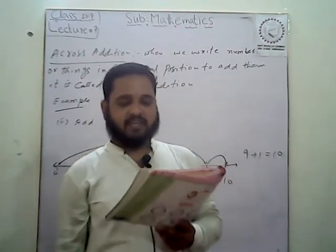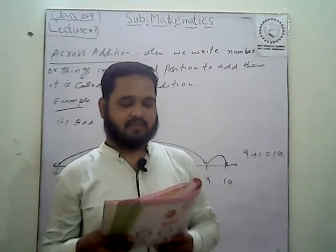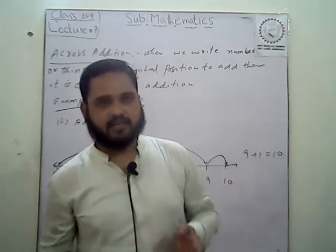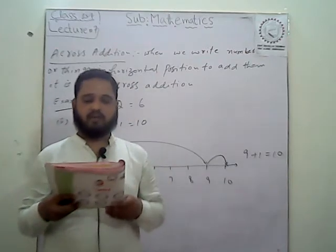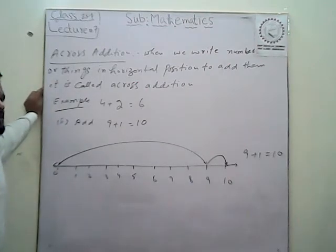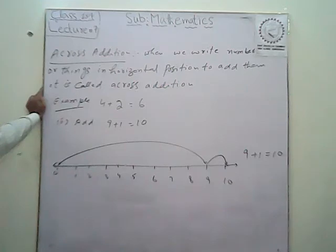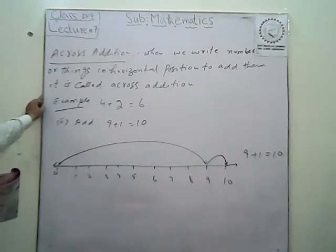Addition takes place by two methods. The first method is cross addition, and the second method is down addition. In cross addition, we write numbers of things in a horizontal position to add them — that is called cross addition.